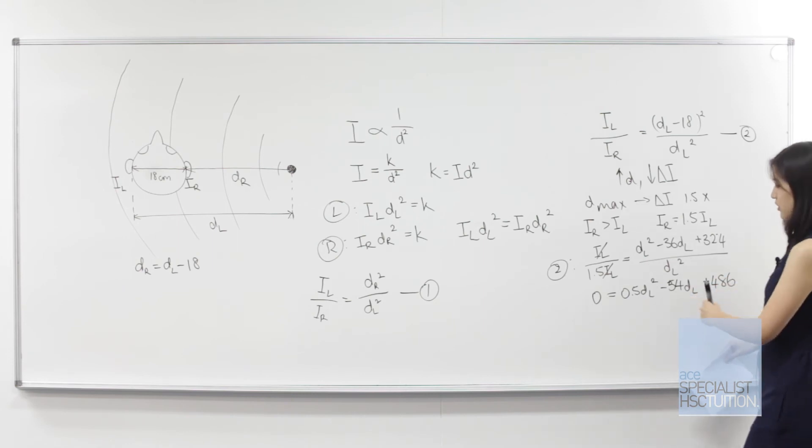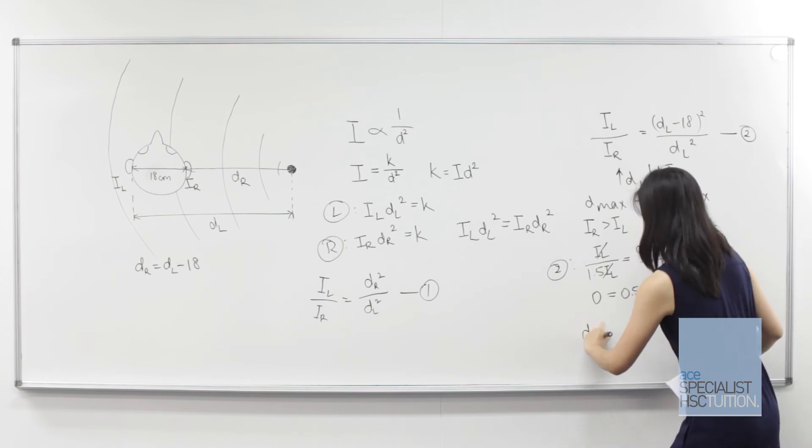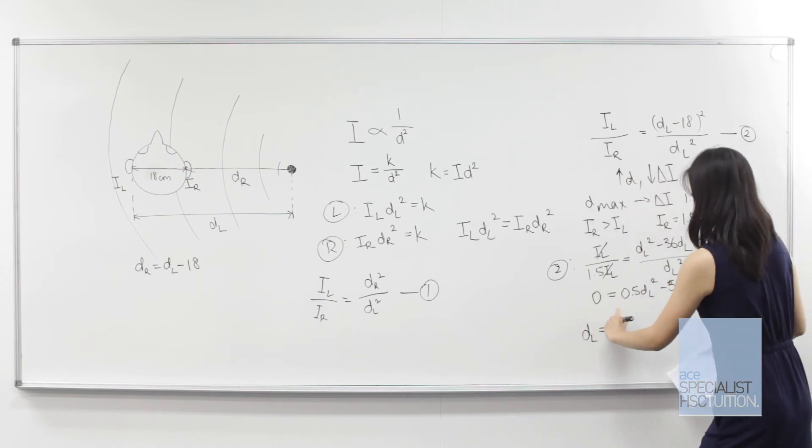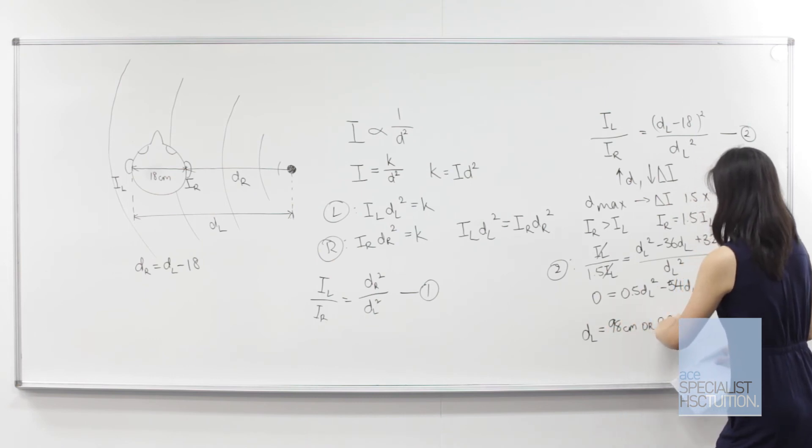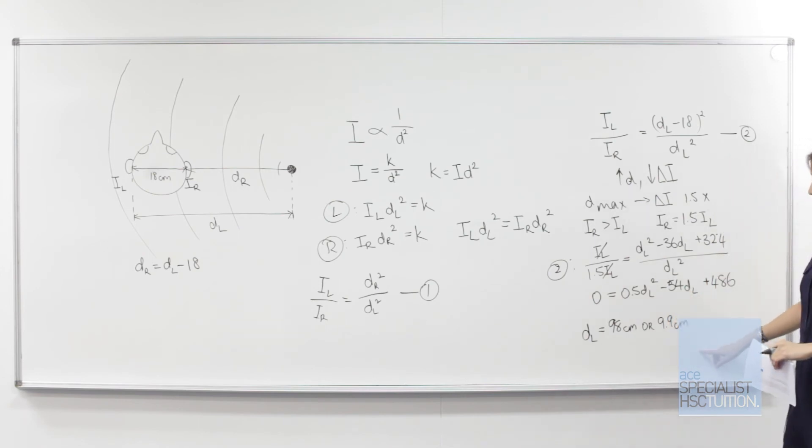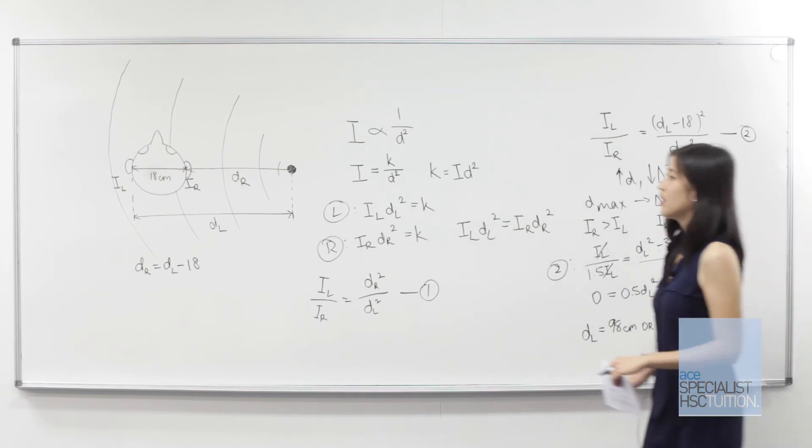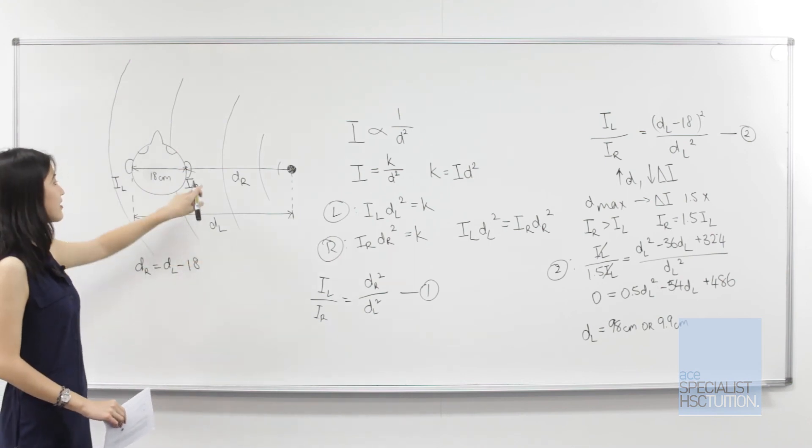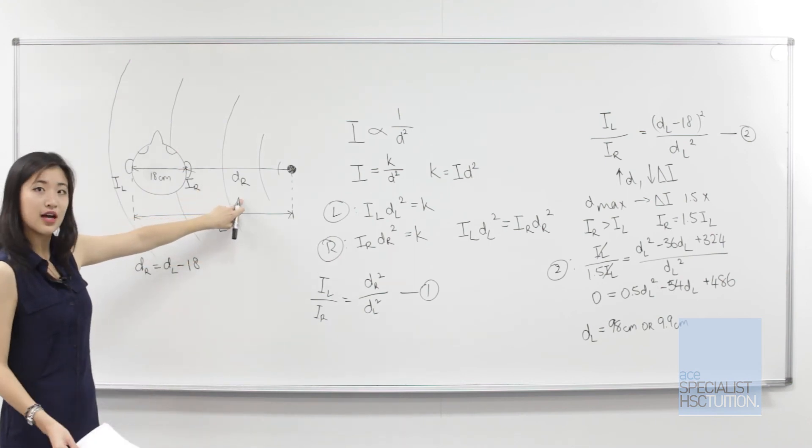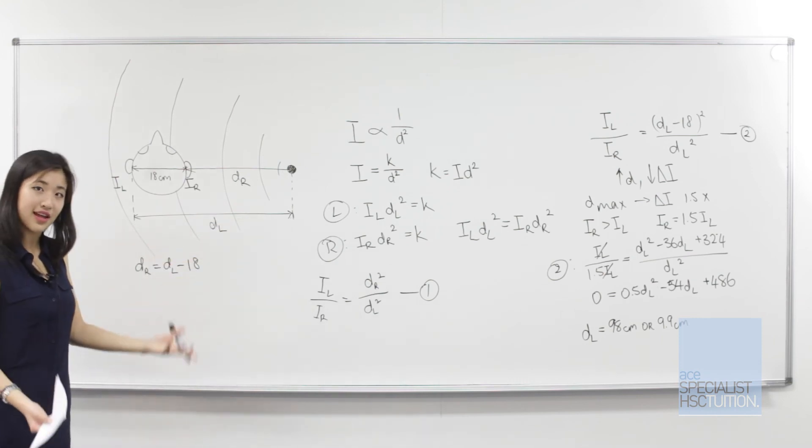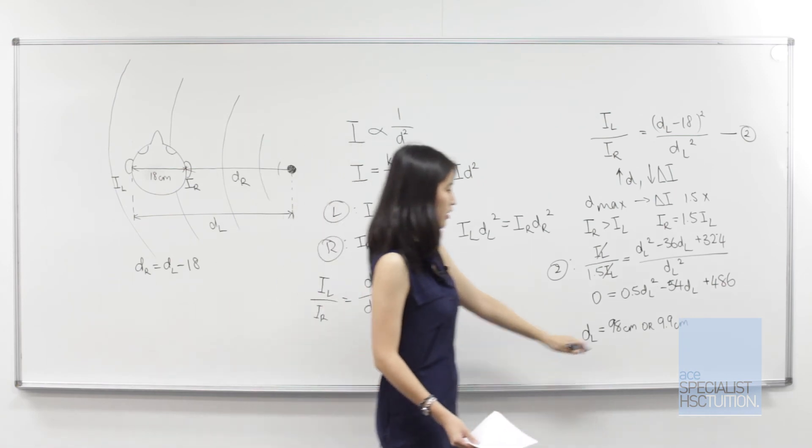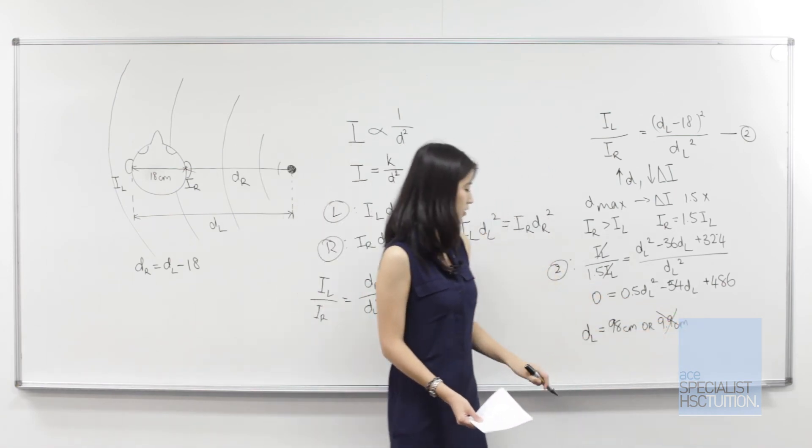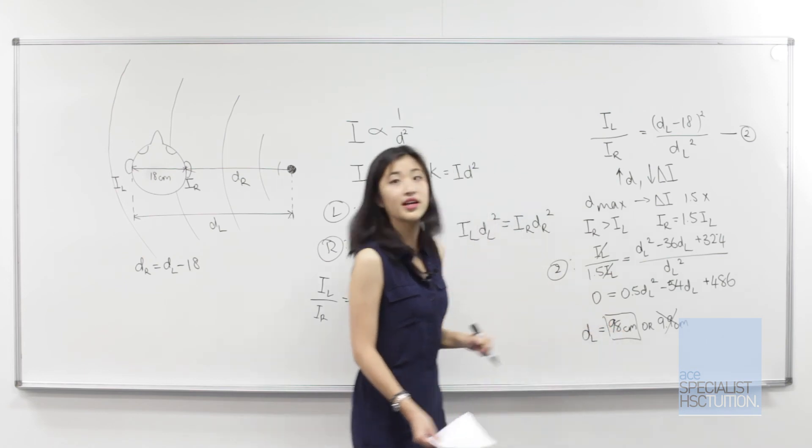One value is 98 centimeters and the other is 9.9 centimeters. We have two possible values for dl from our quadratic equation. But dr equals dl minus 18, and since dr has to be positive, dl must be bigger than 18 centimeters. This means the answer of 9.9 is not possible, and the only possible answer is 98 centimeters.